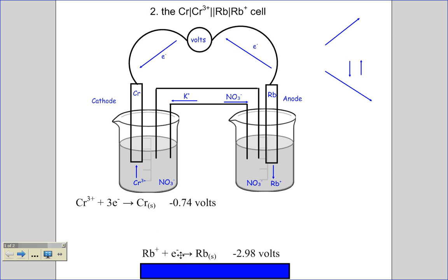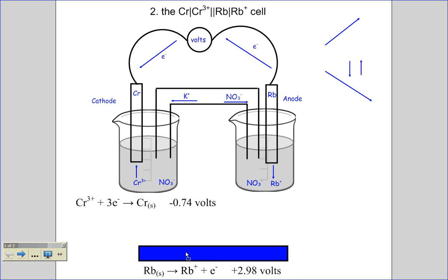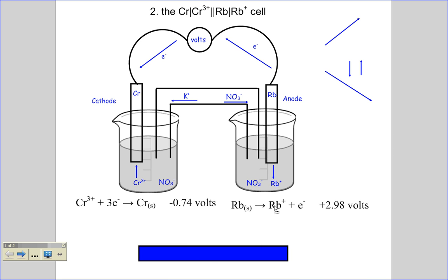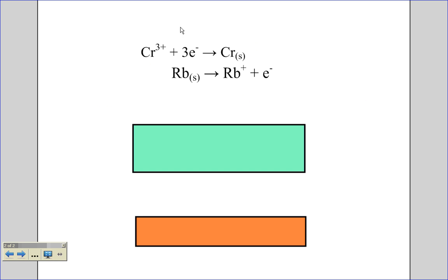The anode, it's the reverse of the reduction reaction, it's the oxidation. So on this side, rubidium is turning into rubidium ions plus electrons. To combine these two, I take their basic reactions, the reduction and the oxidation.